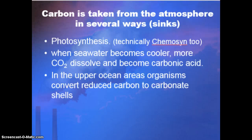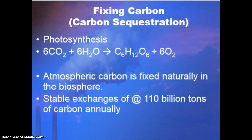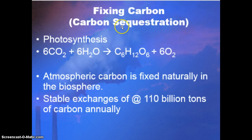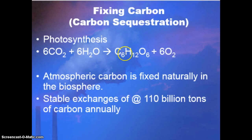Carbon sinks are things that take carbon out of the atmosphere and reduce the impact of global warming — things we want to happen. However, they have drawbacks: when seawater gets colder, more carbonic acid forms, which can harm marine life. Whenever carbon is taken out of the atmosphere, it is called carbon fixation or carbon sequestration — it's being held in an area where it can't get out easily. Photosynthesis is our biggest process that does this, fixing CO₂ into sugars that become the building blocks of all living things in the food chain.